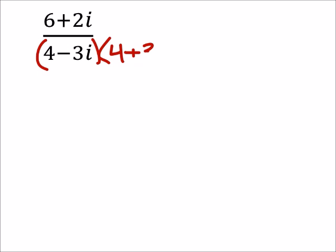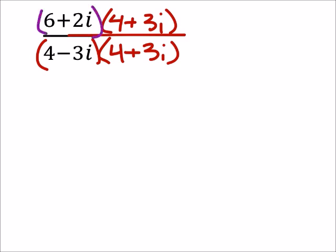So that would be 4 plus 3i. But if I do it to the denominator, I also must do it to the numerator as well. So if we look at these, and yes, this would be in parentheses now. So I can use FOIL. I'm going to do the denominator first.